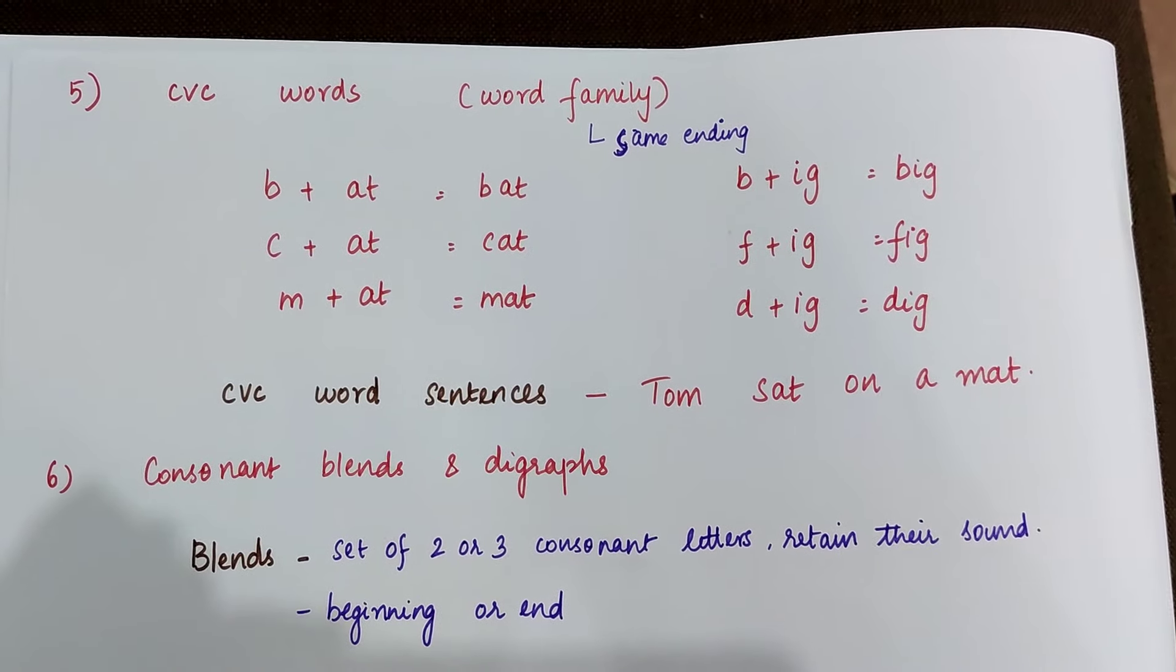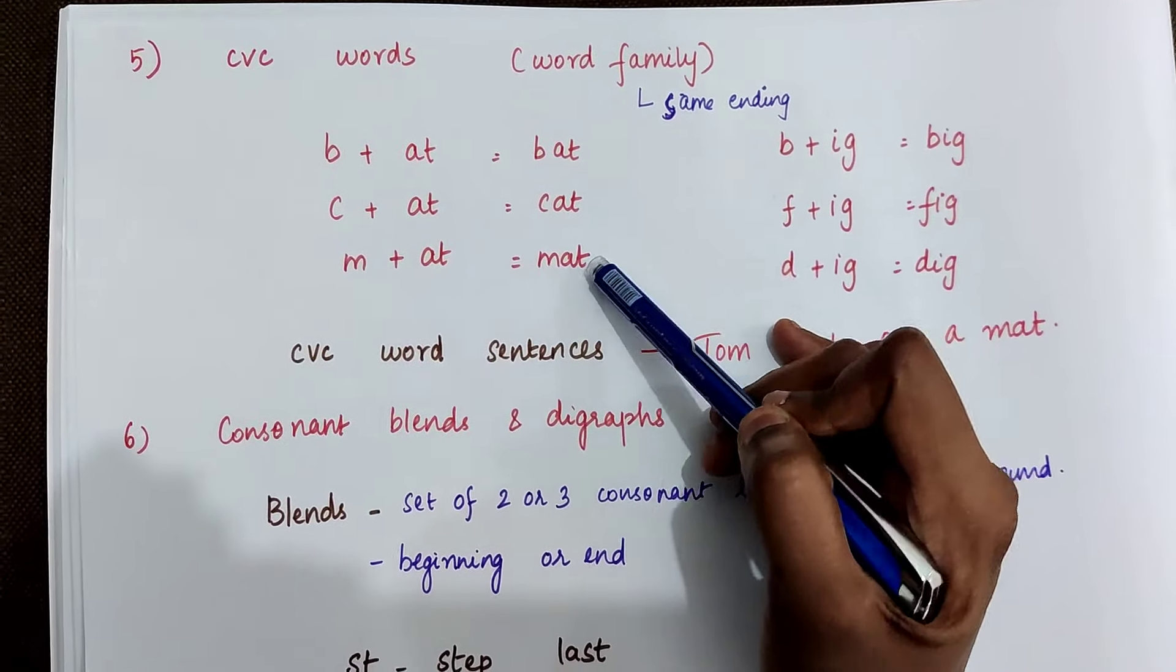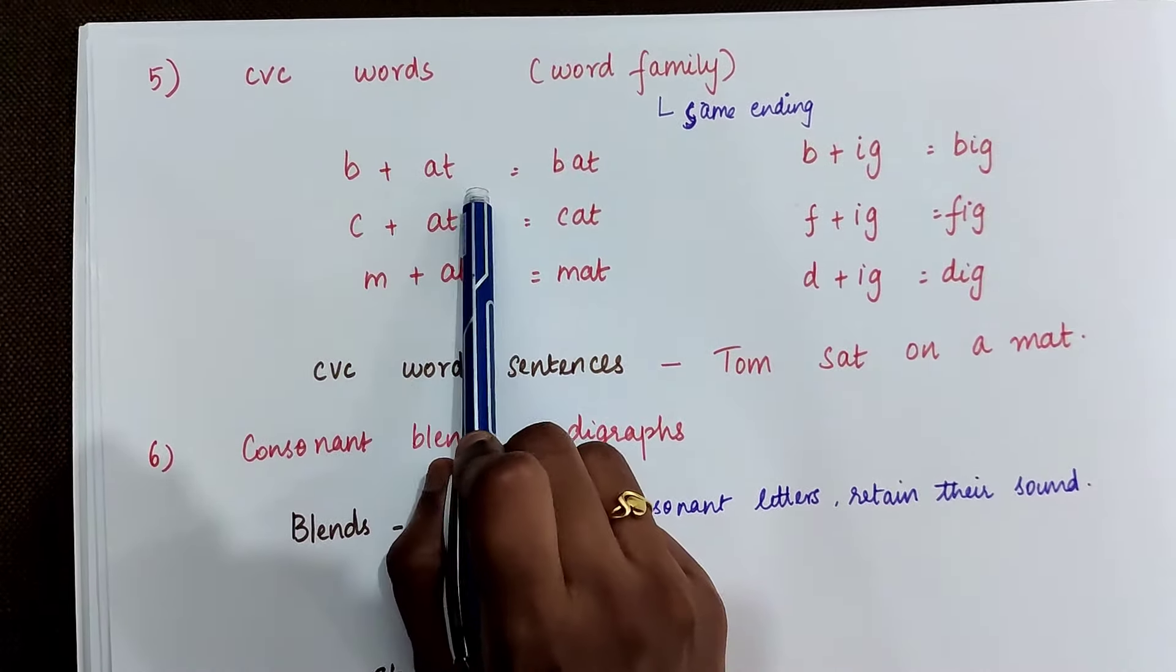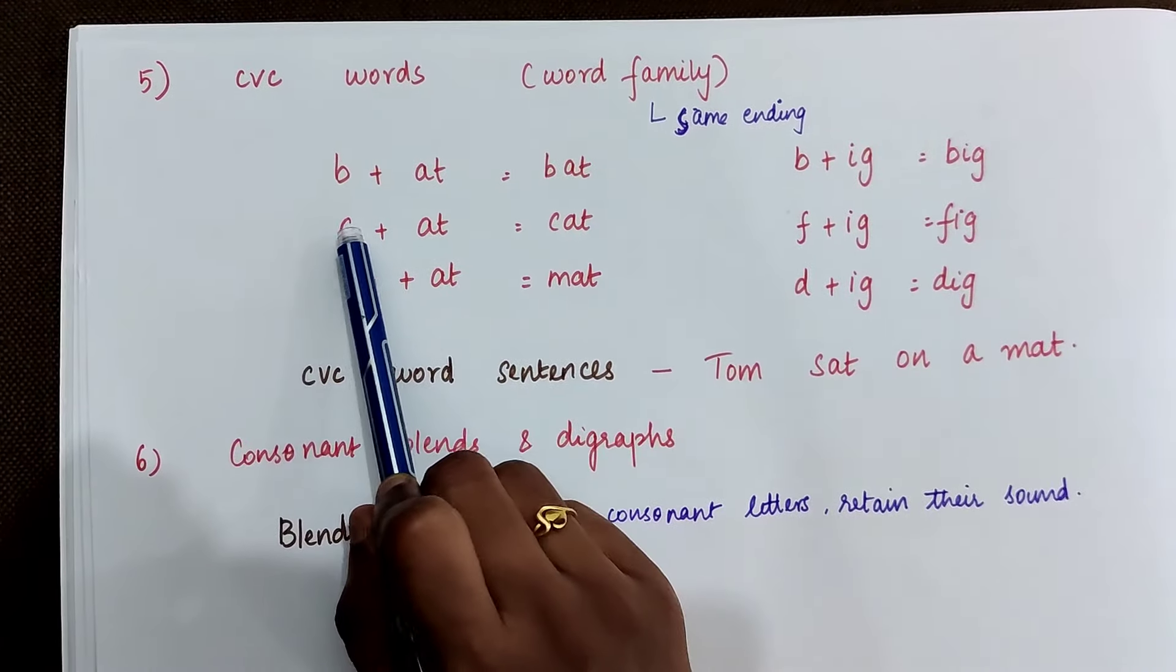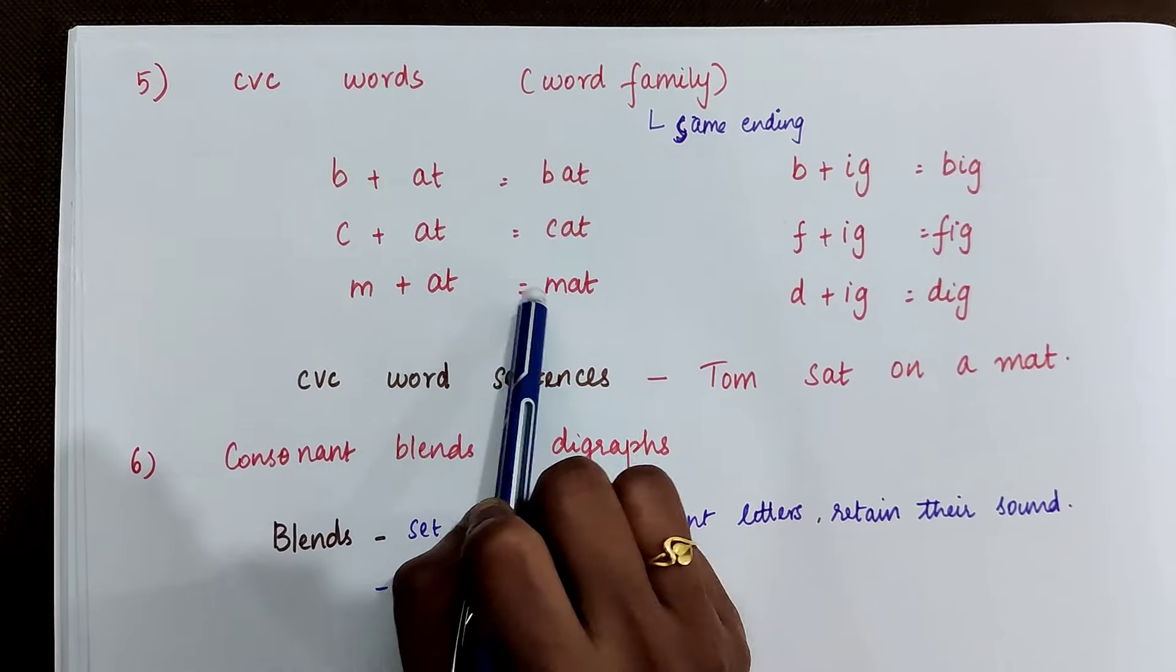For example, in the word family at, we have the words like bat, cat, and mat. It's like b, at, bat. C, at, cat. M, at, mat.